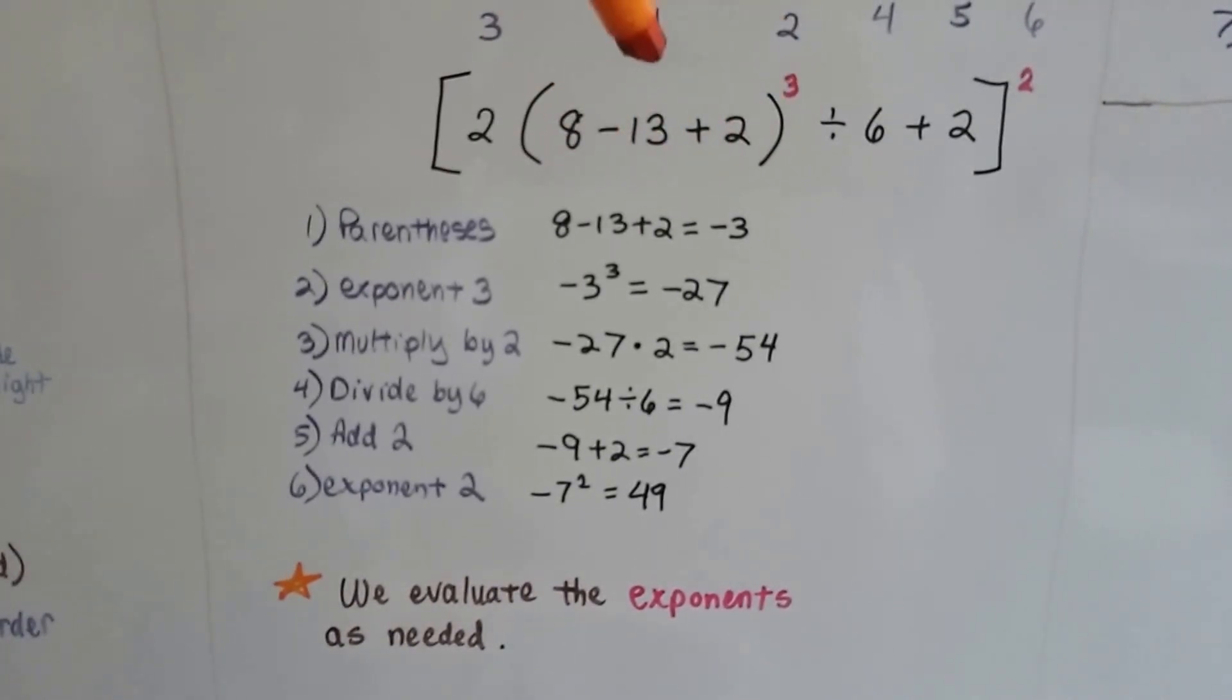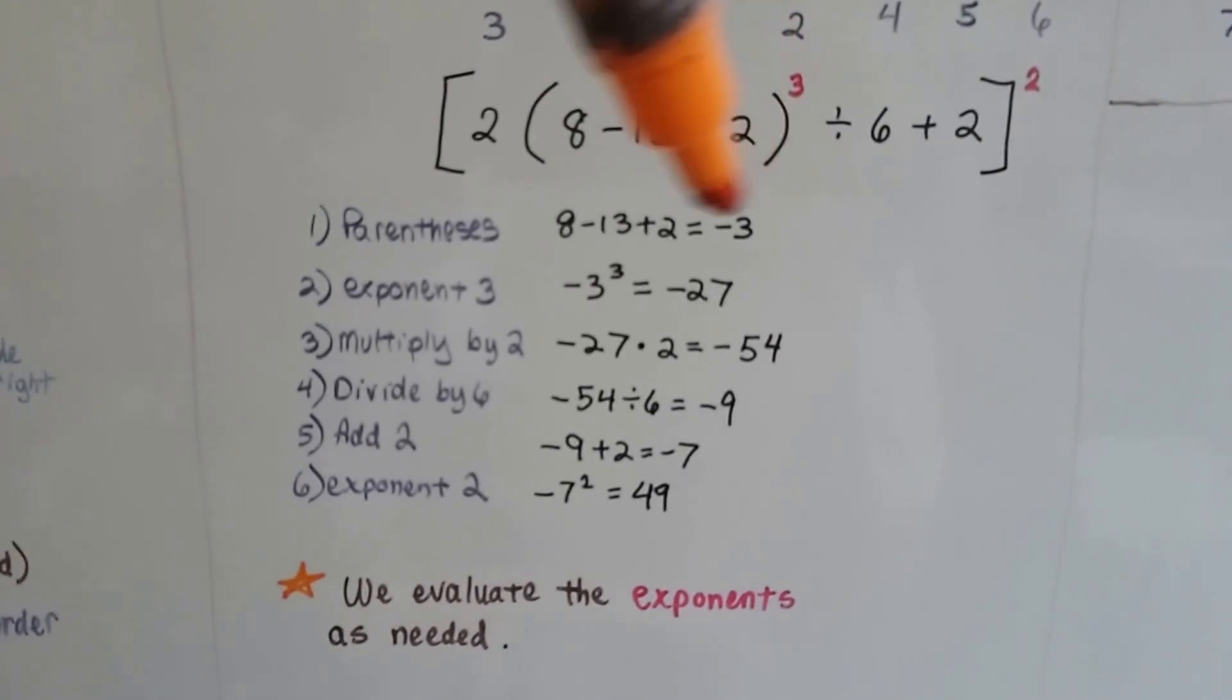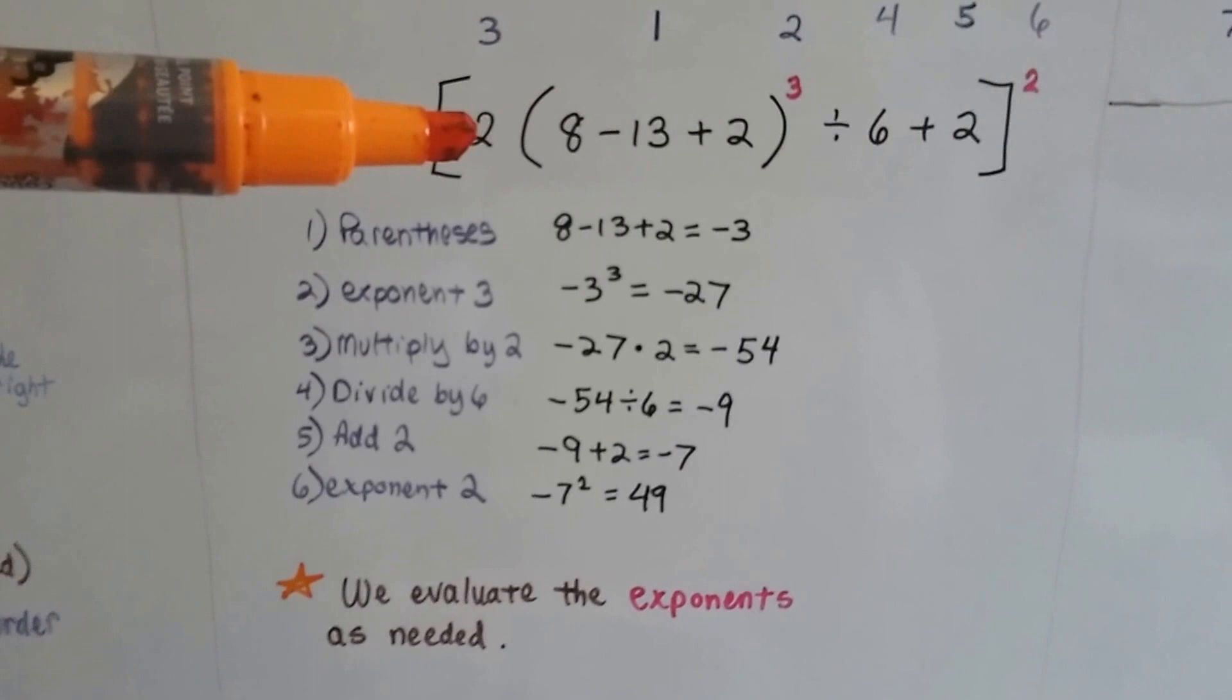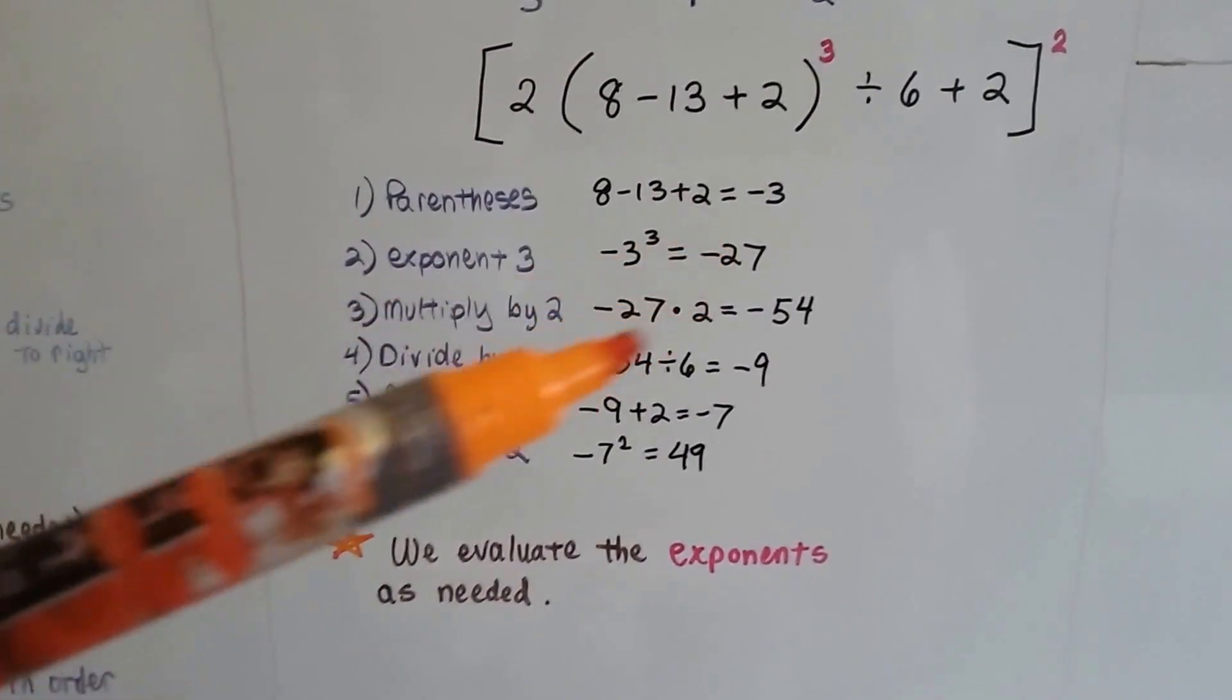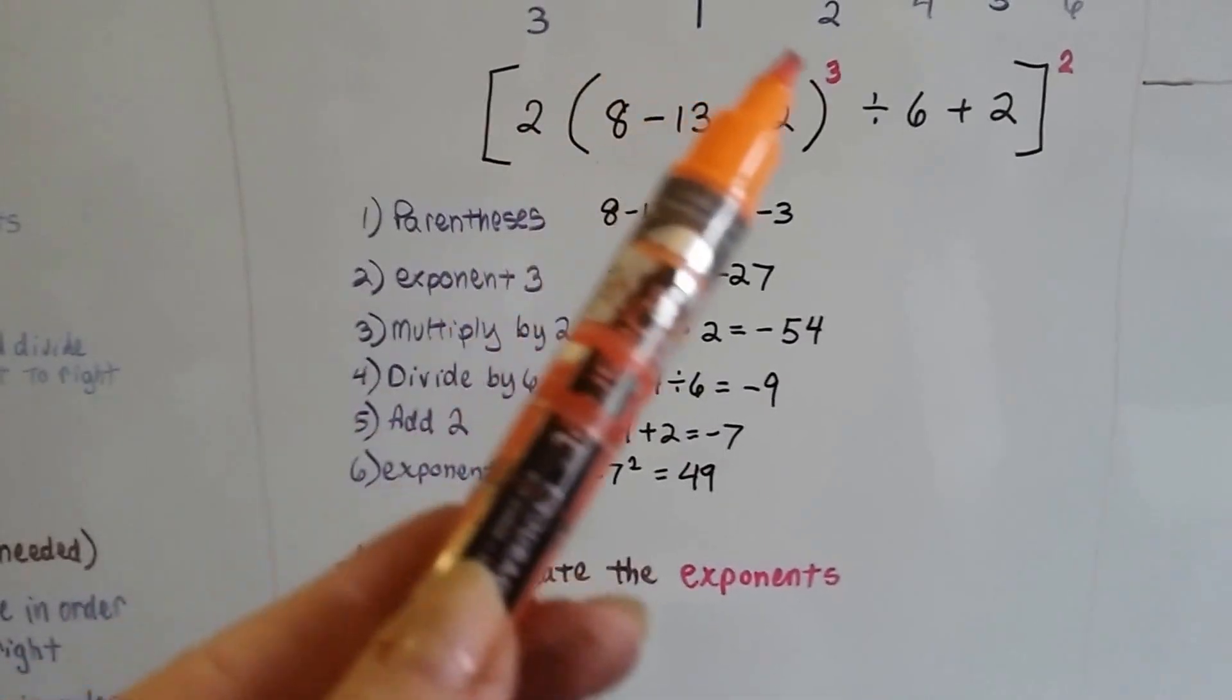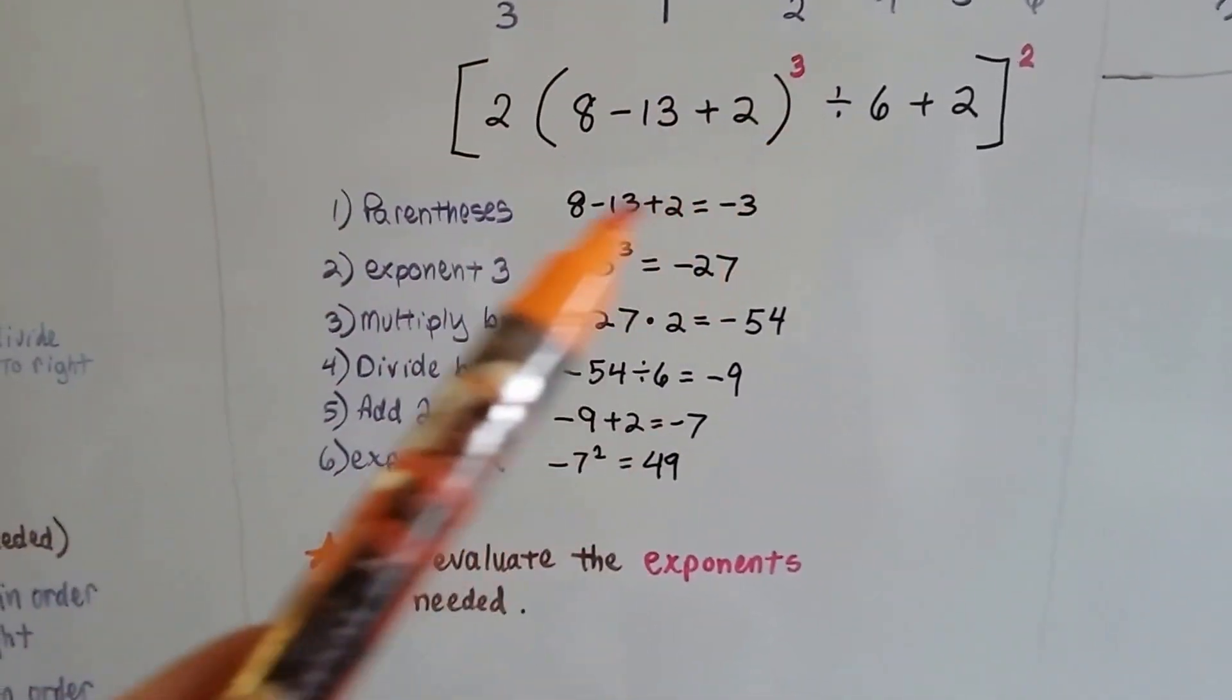So now we've done the first part and the second part, and we've got negative 27 for all of this. Now we're going to multiply by 2, that's this 2 up here, because we need to multiply and divide from left to right. So negative 27 times 2 is negative 54. So now numbers 1, 2, and 3, all of this equals negative 54.